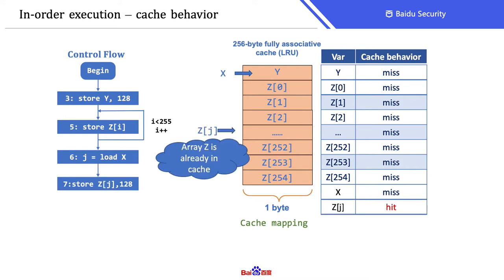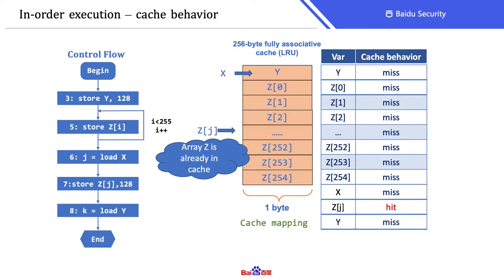Then we have the store operation to Z[J]. At this point, the array Z is already in cache, so it must be a cache hit. Finally, we load Y. Because Y was evicted by X, so it must be a cache miss.